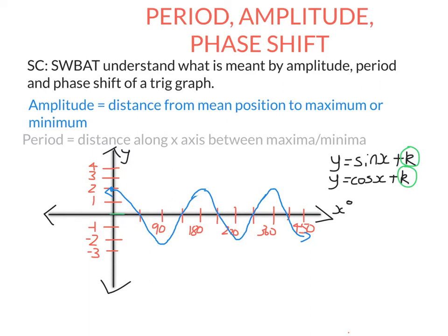So in this graph here, the mean position is along the x-axis, or at x equals 0. That's the middle of the graph. If you cut it along there, it's symmetrical.